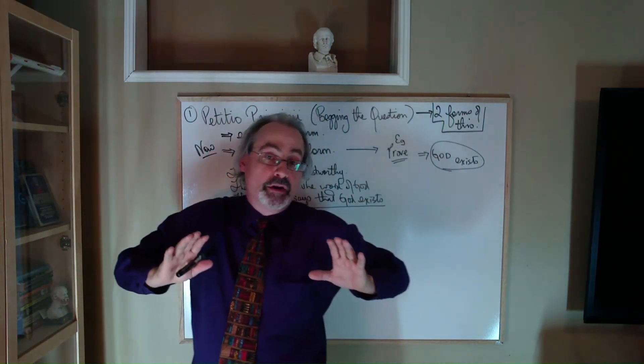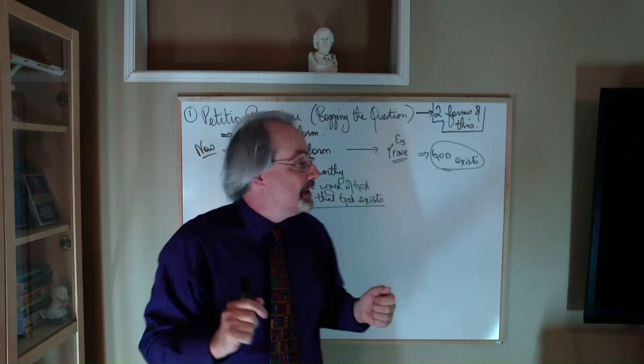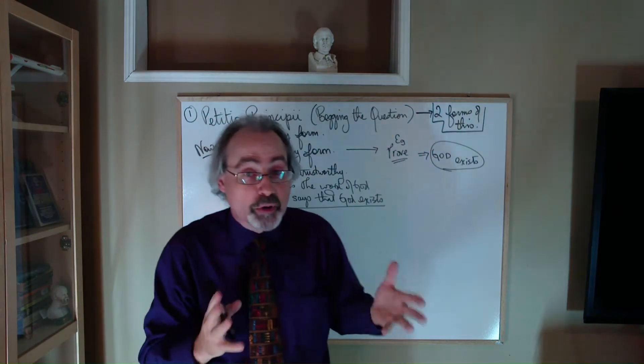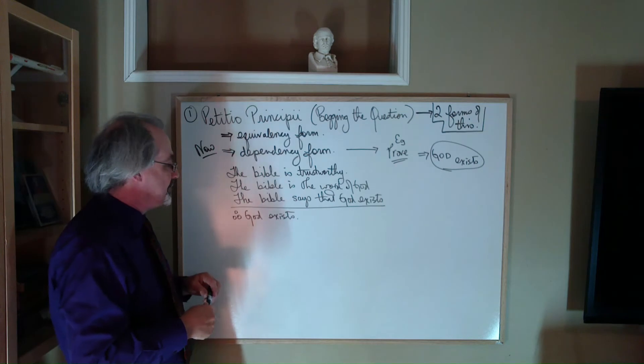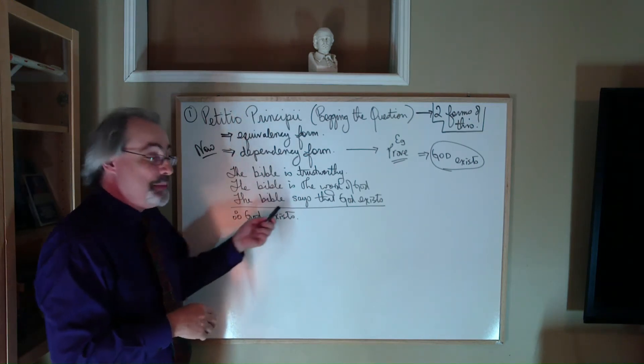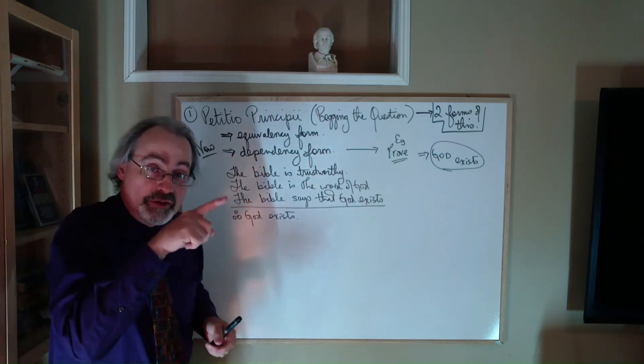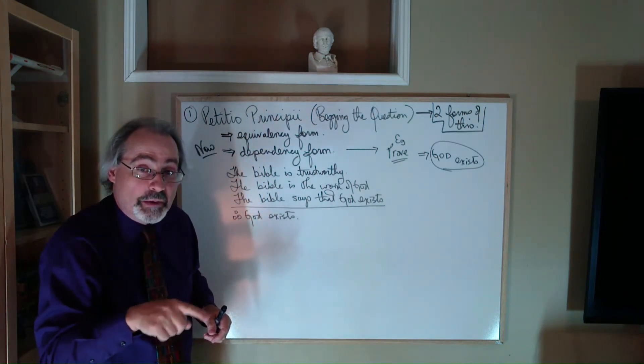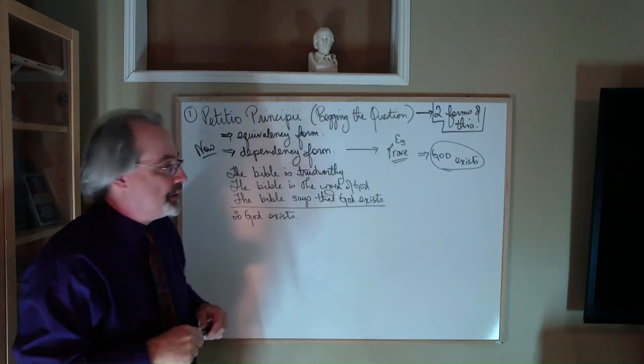And the premises are supposed to support and lead to the conclusion, and the conclusion is going to be something that you've proven or shown. Well, the dependency form says that what you're trying to prove is actually being presupposed up here, hence the circle. You're starting from one point, you seem to be going to another, but really you're just coming back to something you've already started with.